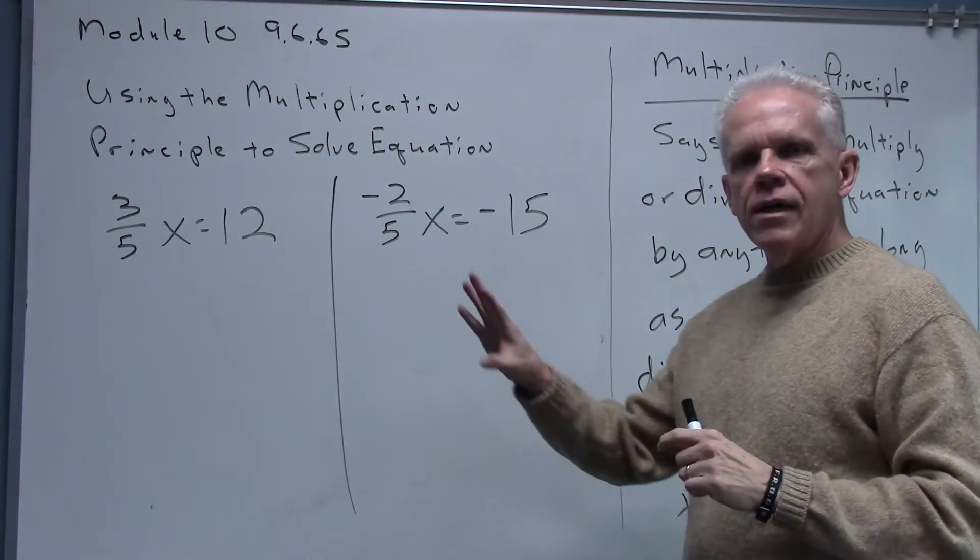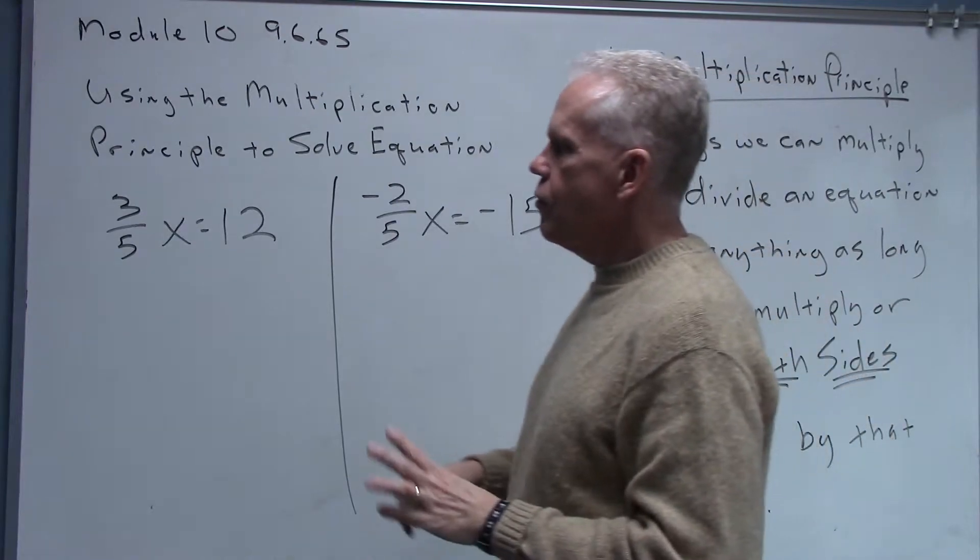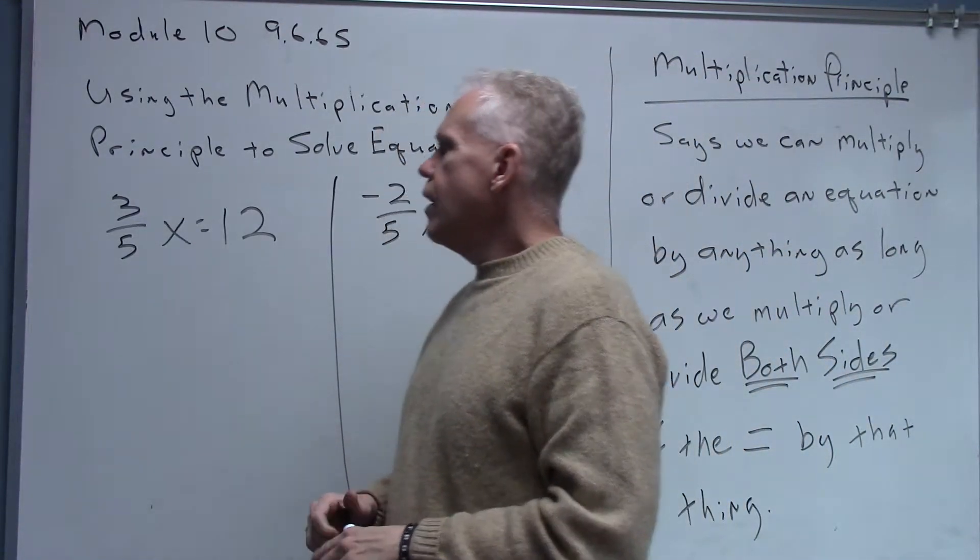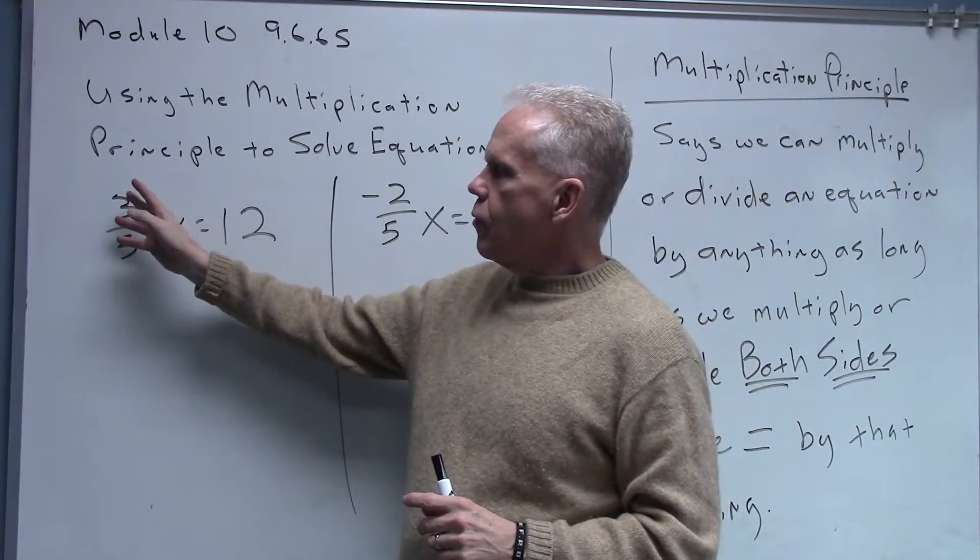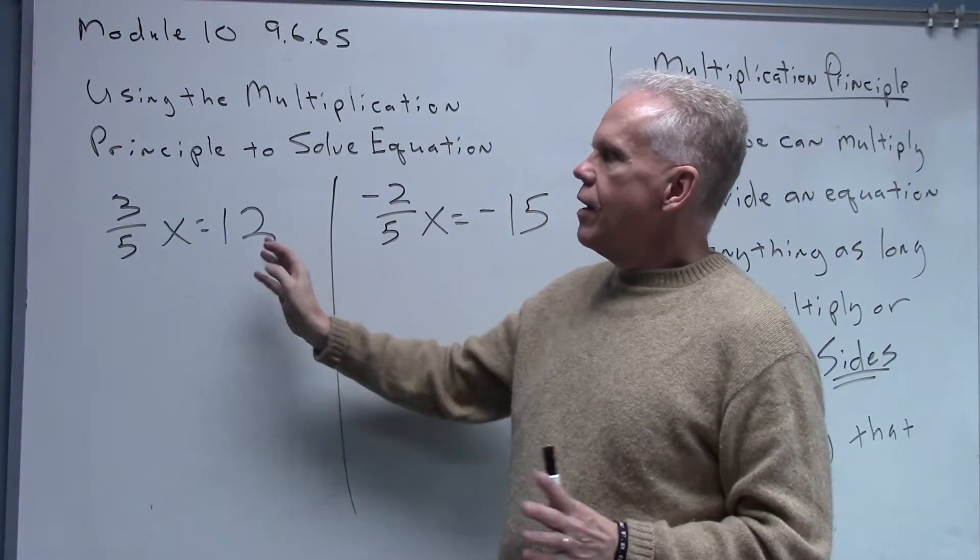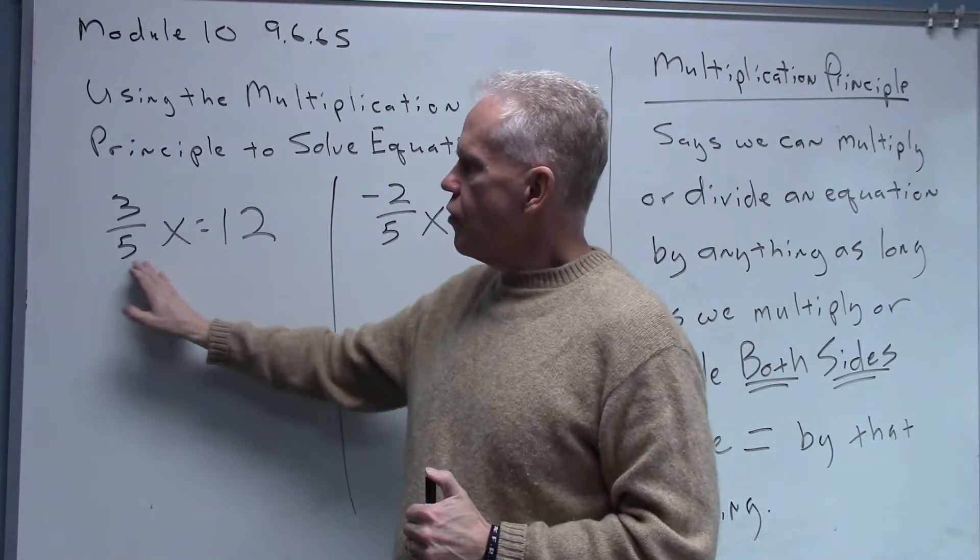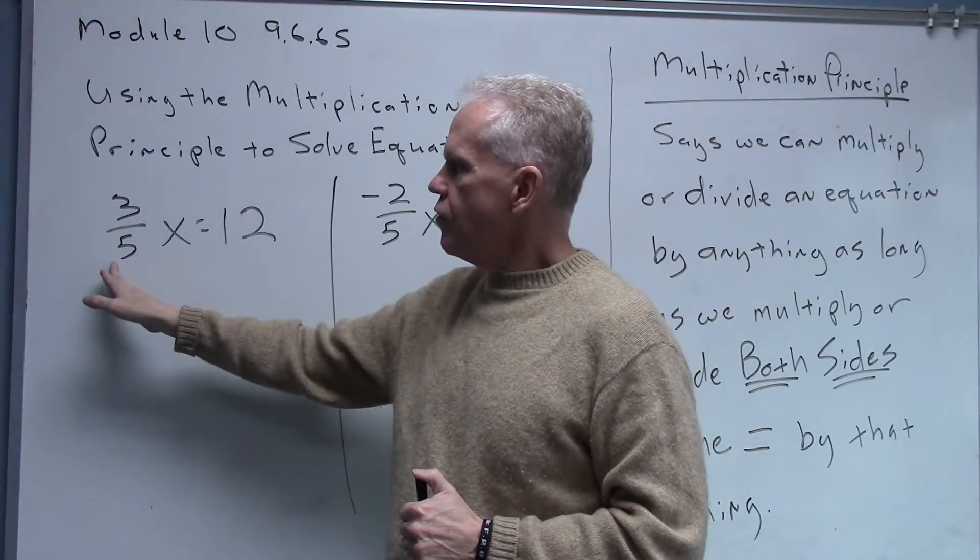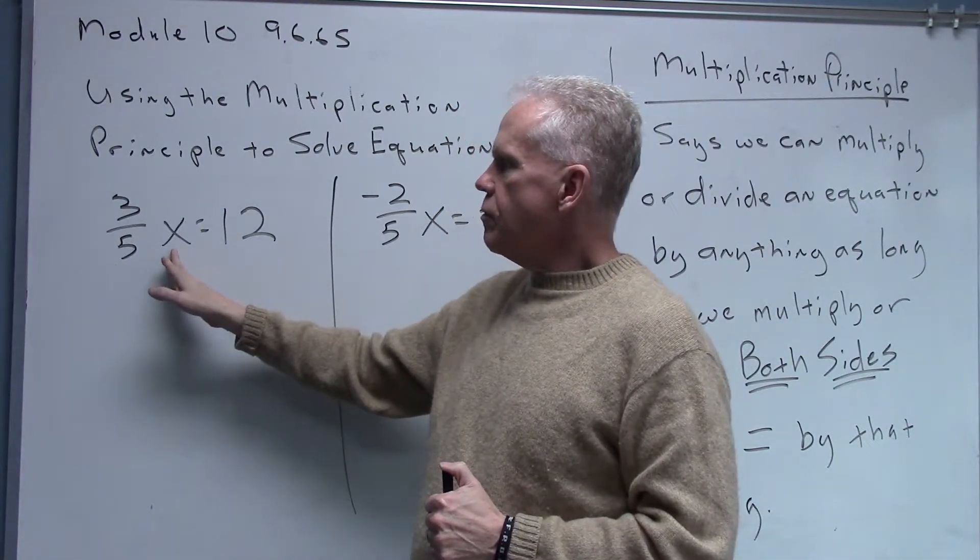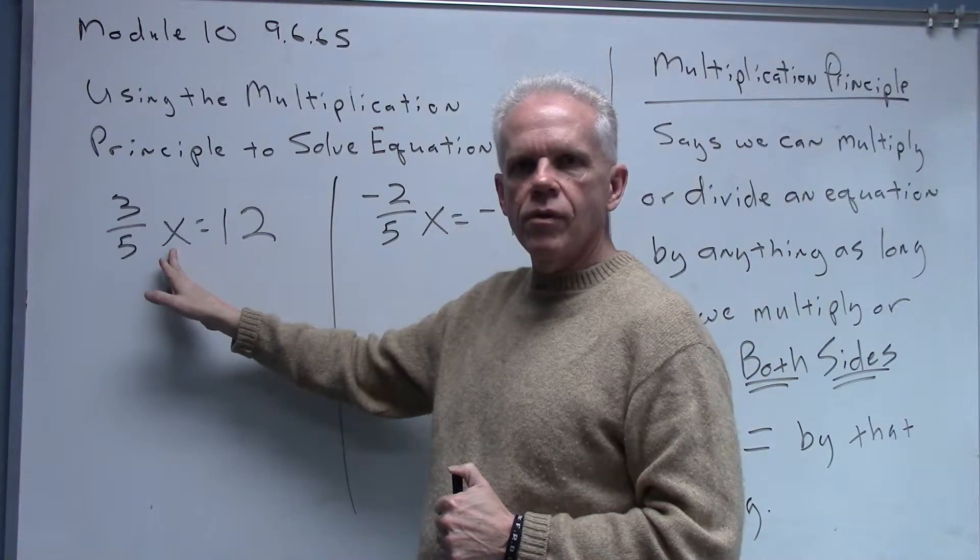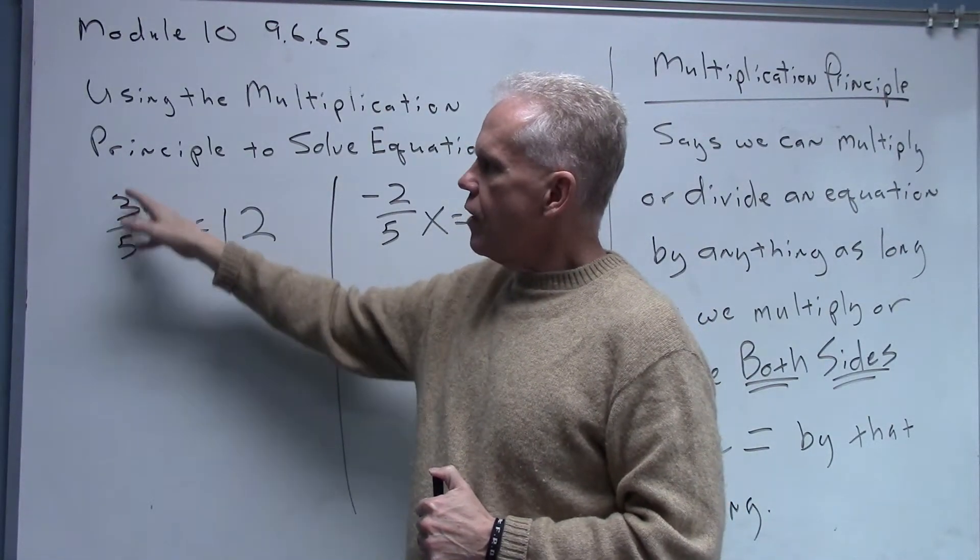This is going to be really painless, a very simple little operation here to handle solving these equations and taking care of the fraction. Okay, so we've got this first equation: 3/5x equals 12. All right, so what I've got is this term three-fifths x. The three-fifths is a coefficient, actually multiplied by the x.